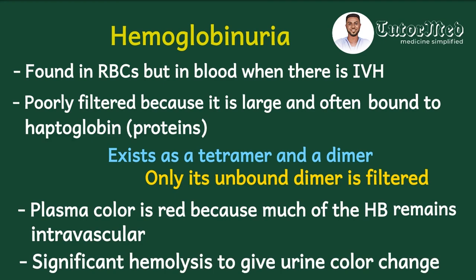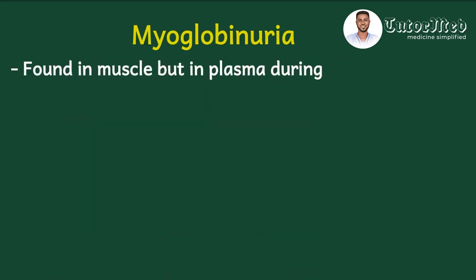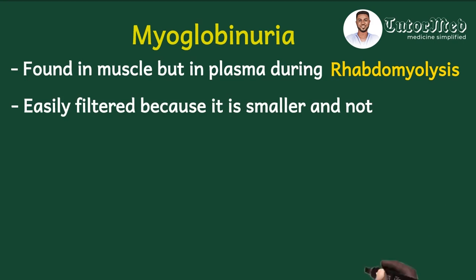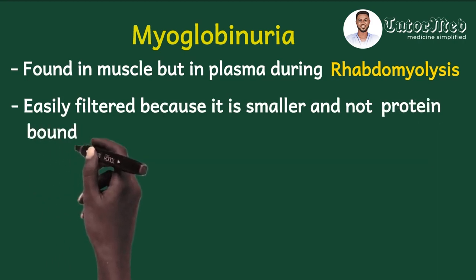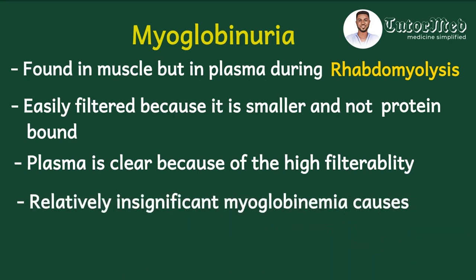Myoglobin is a heme-containing molecule found in muscle, not freely in blood. It can enter plasma during rhabdomyolysis from any cause — crush injury or myotoxic snake venom. In contrast to hemoglobin, myoglobin is easily filtered because it is relatively smaller and not protein-bound. Because it is easily filtered, it does not accumulate in blood, so centrifuged plasma remains clear. Its high filterability also means that relatively small amounts of myoglobinemia are sufficient to cause urine color change.